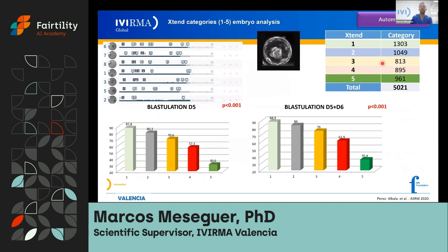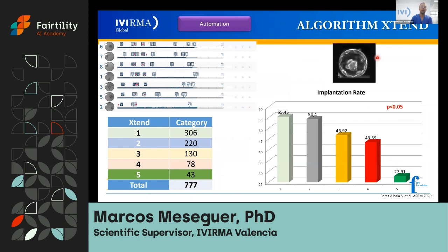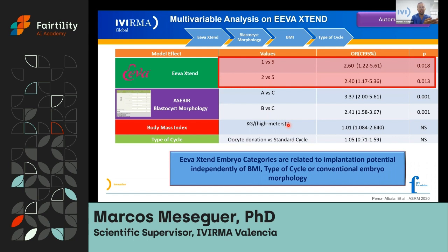Looking at global blastulation rates, day five and day six, you see a distribution with more embryos in the best categories. When we compare these scores with the implantation potential of the blastocysts that we transfer, you see a gradient of implantation from number one to number five — from 55% down to 27.9%. With logistic regression comparing classical morphology with EVA Extend, we demonstrated that both classifications are independent, and that number one has an implantation rate 2.56 times more than number five, a magnitude similar to the difference between grade A and grade C morphology of the blastocyst.